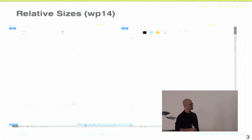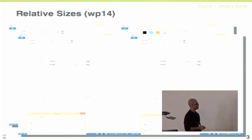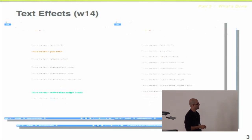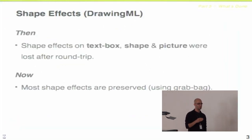Shape effects — the same effects available on text can be applied to shapes: 3D effects, glow, and other effects. Before, these were lost after round-tripping. Today they're preserved. Shapes with content: if you had a shape with content inside — like a triangle containing a table or a circle with a chart — previously you'd lose the shape (converted to a text frame) and charts weren't supported in LibreOffice a year ago so they were lost after import. Today it's almost perfectly preserved, with charts being preserved as well.